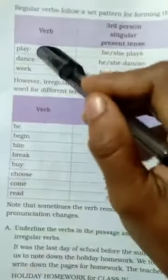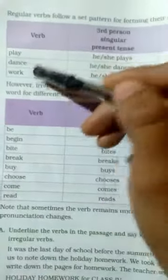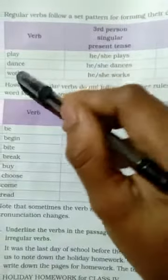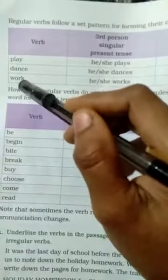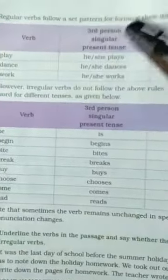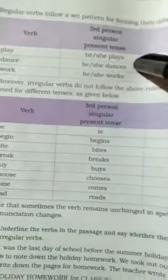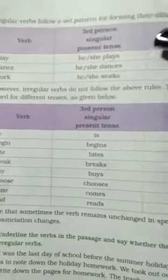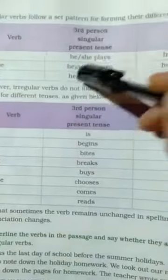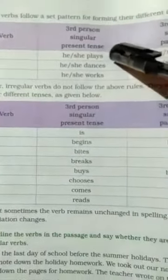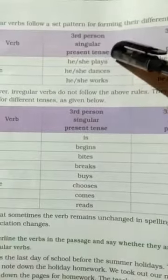See here, they have given some words. Play — that is one of the verbs. Dance — that is also one of the verbs. Work — also one of the verbs. So that third person singular present tense — how it is changing. In the time of present tense, play is one of the main verbs. Play is changing like: he or she plays. In the singular form, we are adding S to the verb.